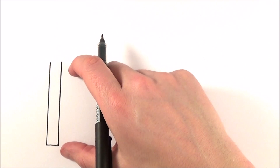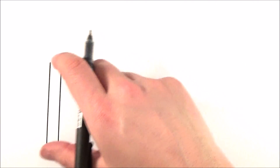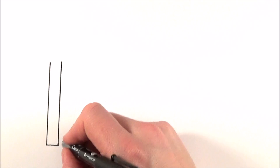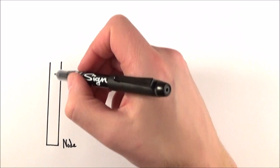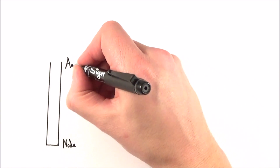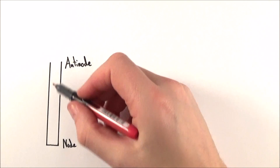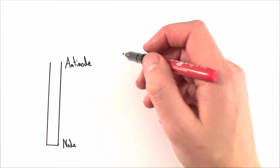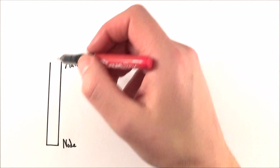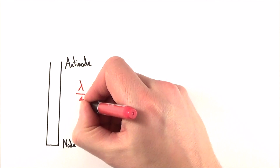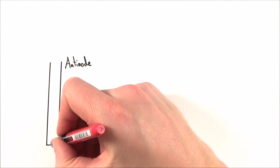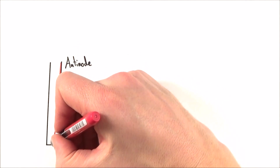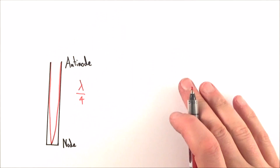Here we have a tube of a certain length, and if we set up a standing wave inside it, there's a column of air that's vibrating. The bottom end has a node because that's where it's fixed in position. At the very top, what we have is an anti-node. The first standing wave that fits in here must go from a node to an anti-node. Since the distance from a node to a node is half a wavelength, the distance from a node to an anti-node must be equal to a quarter of the wavelength. So we start at the node at the bottom and move up to the anti-node at the top.